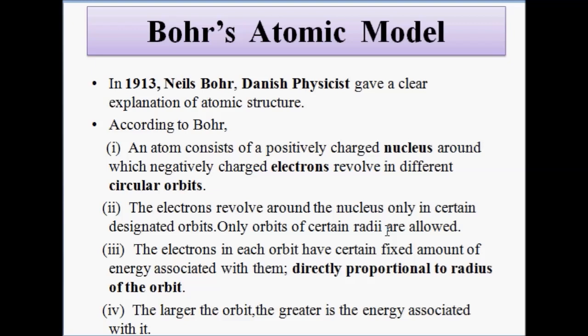The third postulate is that electrons revolving around the nucleus in a particular orbit carry a fixed amount of energy. This energy is directly proportional to the distance or radius of the orbit — the distance between the nucleus and the revolving electron. So the greater the distance from the nucleus, the greater the energy associated with that orbit.